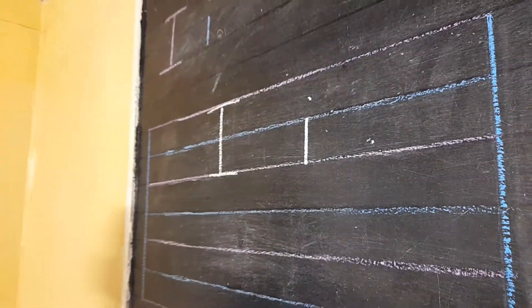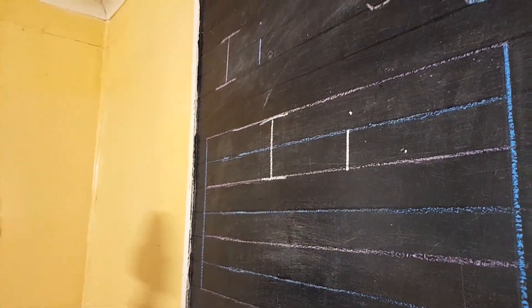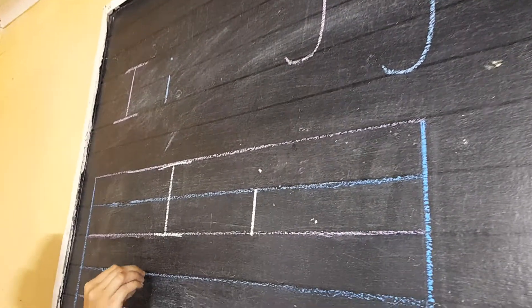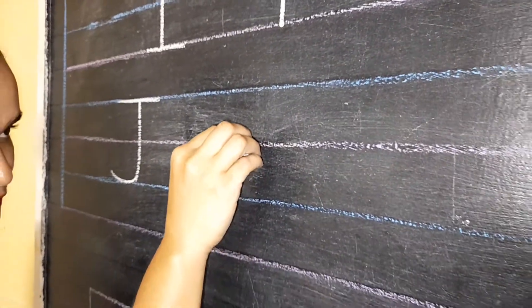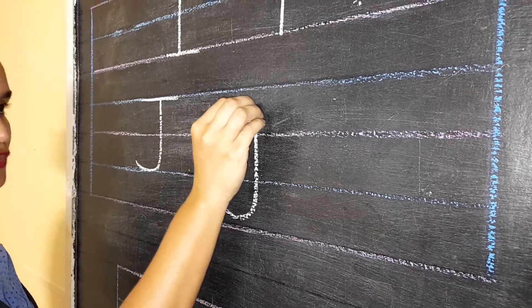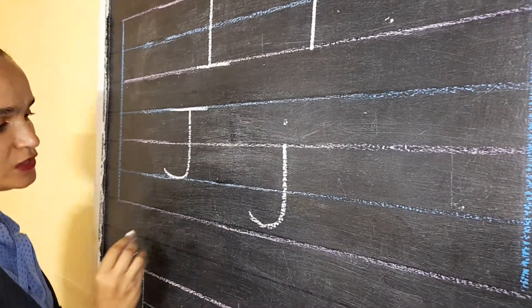How do we write big letter J? Down, round at the bottom and we go across on top. Small letter J starts in the middle, go down, round and a dot on top. Can you see?